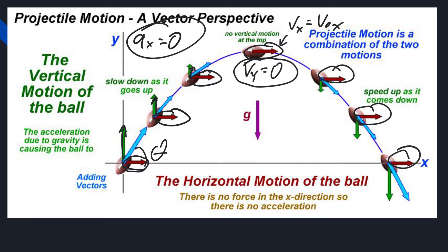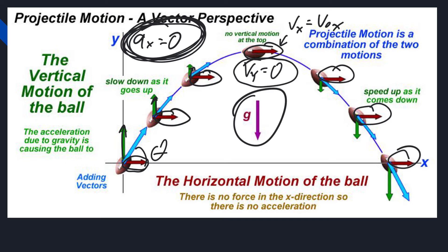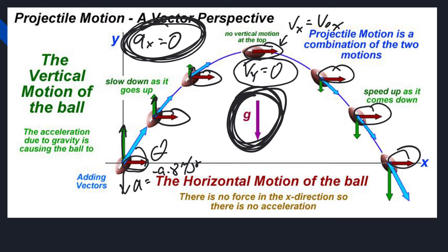The other thing is the acceleration. The acceleration horizontally is going to be zero, but the vertical acceleration is going to be little g — negative 9.8 — and that's going to be the same everywhere, especially at the peak. A lot of students will say the acceleration is zero at the peak — no. The vertical velocity is zero at the peak; the acceleration is still going to be little g.